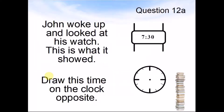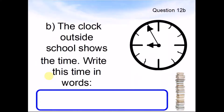Question 12a. John woke up and looked at his watch. This is what it showed. Draw this time on the clock opposite. Pause the video until you are ready for the next question. B: The clock outside school shows the time. Write this time in words. Pause the video and answer the question.